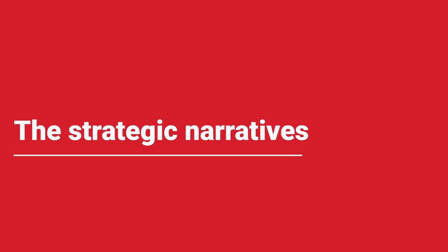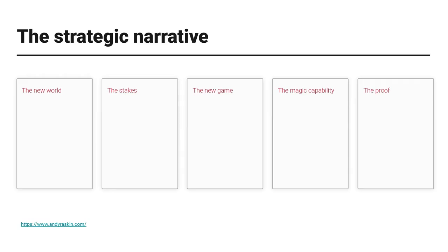We start out with strategic narratives. The strategic narrative framework I get from Andy Raskin — I provide a link for this. The framework is: there's a new world, a new environment around us. There are stakes because of that new world — winners and losers. Because of this, there's a new game to play with a magic capability, and then associative proof with regards to those winners and losers. I use this for a lot of clients, understanding their products, strategic narrative, and how to orient the program.